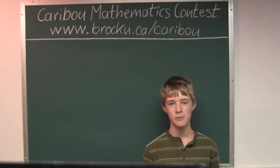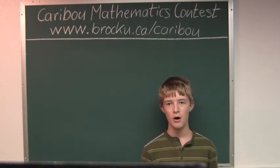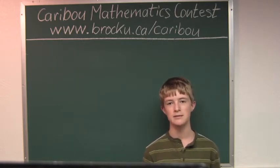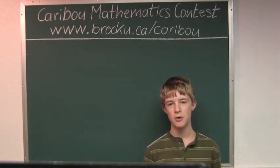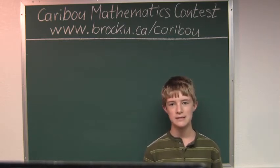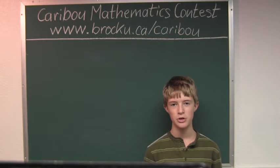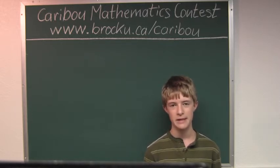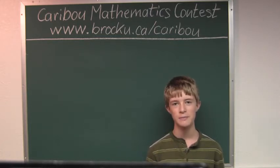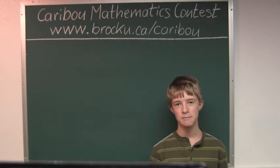The bean family is very particular about beans. At every meal, all beans eat some beans. Paw bean always eats more beans than Ma bean, but never eats more than half of the beans that were eaten. Ma bean always eats the same number of beans as both children together, and the two children always eat the same number of beans as each other. At their last meal, they ate 23 beans all together. How many beans did Paw bean eat?